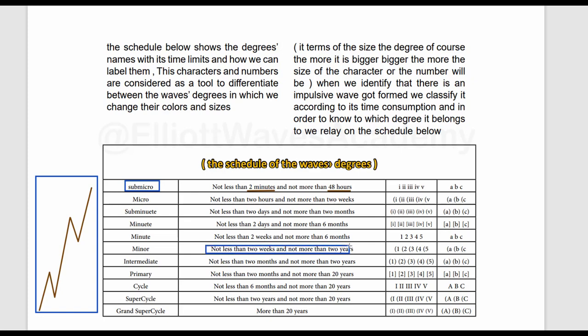Let's say that this wave consumes a time not less than two weeks and not more than two years. This means that this wave is from a minor degree. If this wave consumes more than 20 years—like the impulsive waves that we find in the monthly chart or in the historical data—then we say that this wave is from a grand super cycle degree.